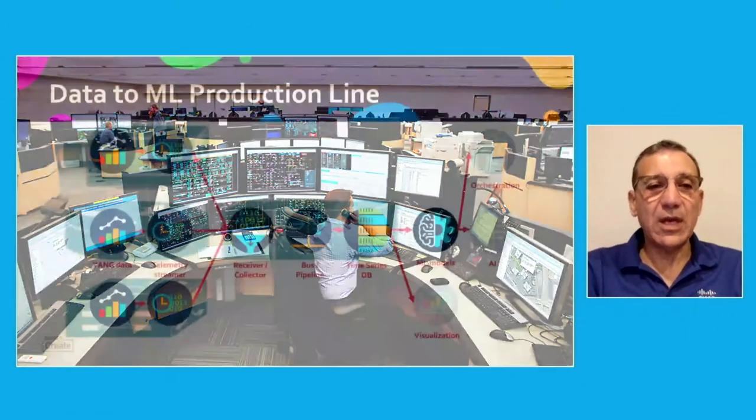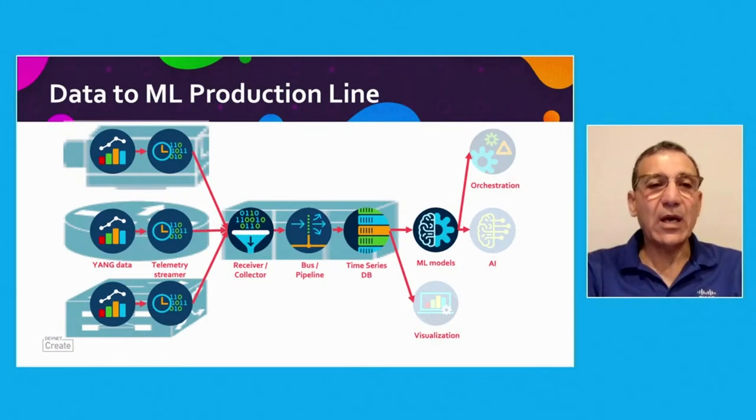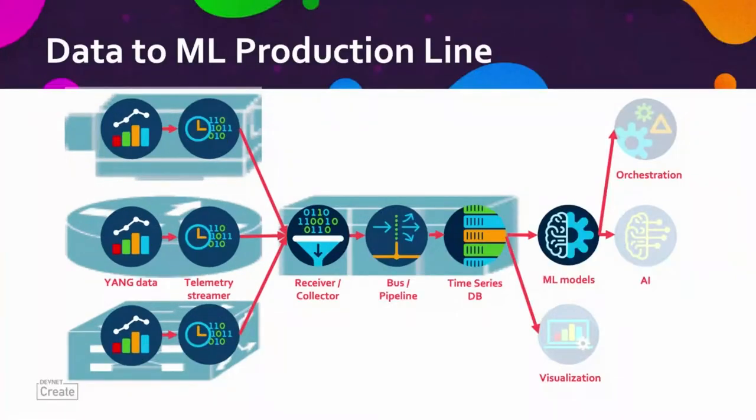So what we do now is that we build these systems that I call data to machine learning production lines, where we have, if you look at from left to right, the data generating sensors and equipment and things that can send us information about performance indicators, state, tables of data, temperature, locations, trading, large number of things.